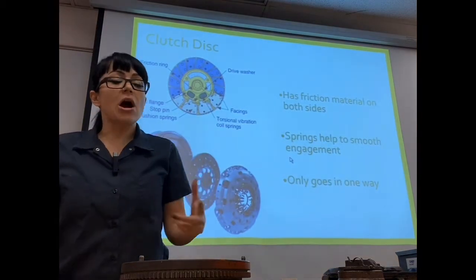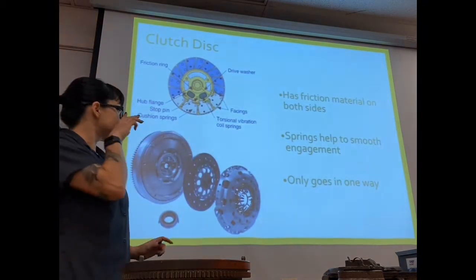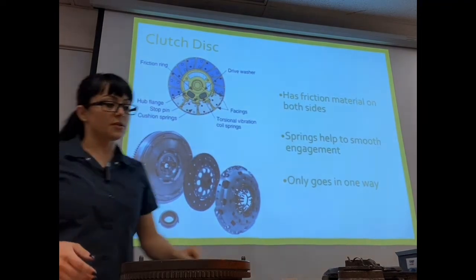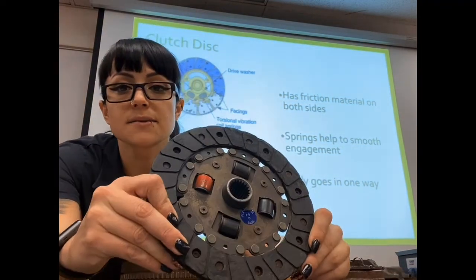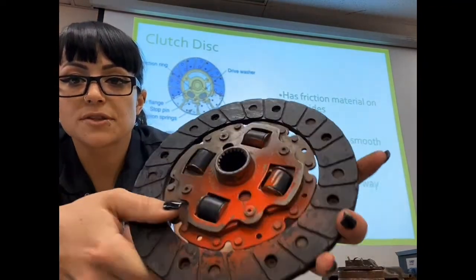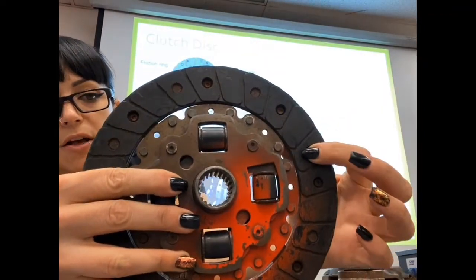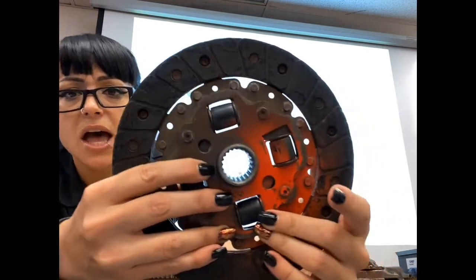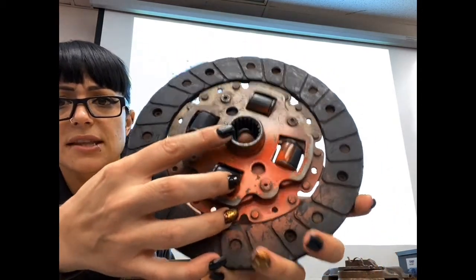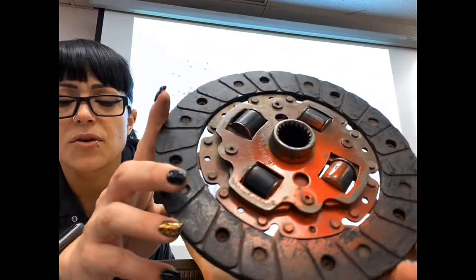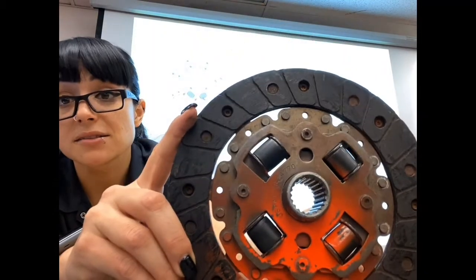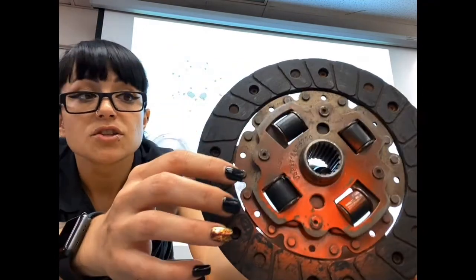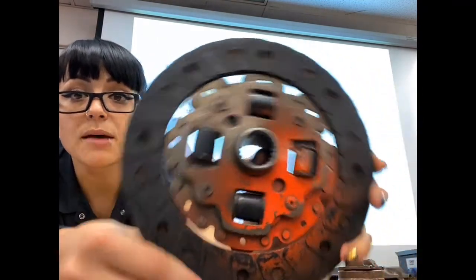The next piece in our assembly is our clutch disc. The clutch disc has a friction material — it's very much like a brake pad material. This is really like one big round brake pad. In the center it looks like a puzzle piece — what we call splines — where it is going to fit onto a shaft that also has splines. It fits onto it like a puzzle piece and they will be able to move together.